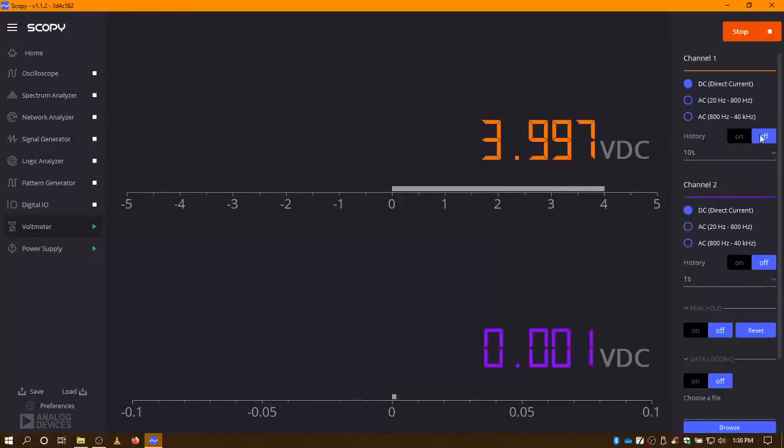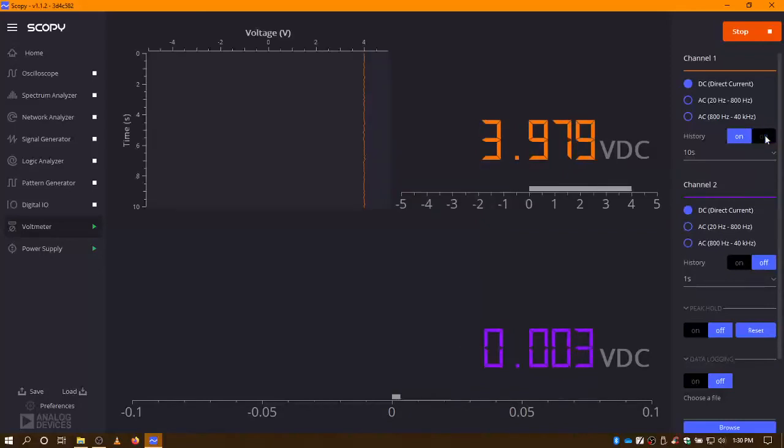A couple of features here. You have something called history. If I turn that on, you'll see both the digital readout and the wave being drawn. You can set that anywhere from one second, 10 seconds, or even 60 seconds. For us, I don't really need a history to see if there's any spikes, so I'm going to shut that off.